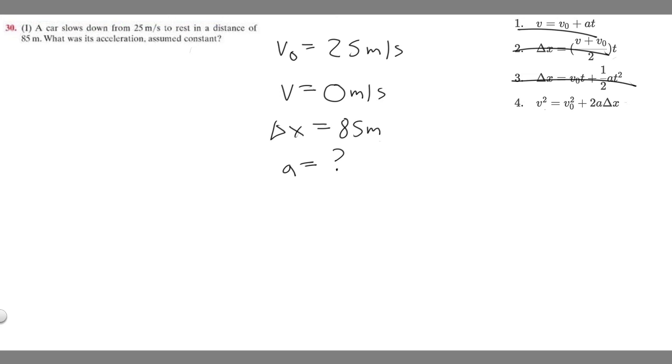So let's just plug everything in. v squared—and v is 0, so it's going to be 0 squared. And 0 squared is just 0. So 0 equals v₀ squared. So this number right here is squared—25 squared plus 2 times a times Δx. And Δx is 85 meters. So I'm going to move this out front. So 2 times 85 is going to be 170. So this is the same thing as 170a.